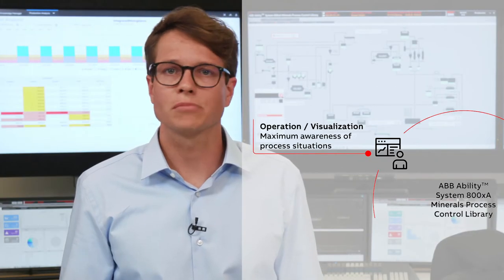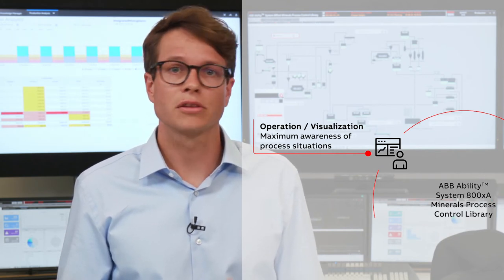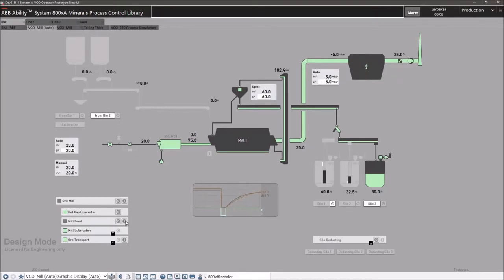Visualization is absolutely key. It's the main interface between humans and the production site. The Minerals Library elements automatically change their appearance with the aim of providing high situation awareness for any given situation in the plant.